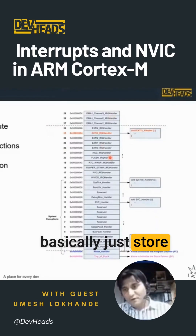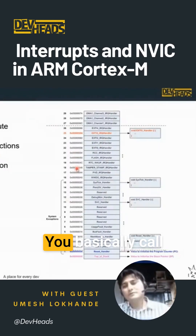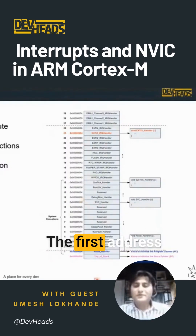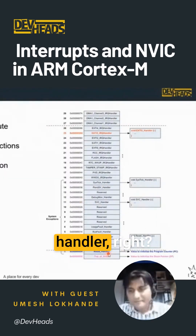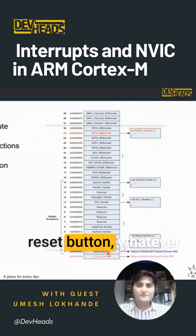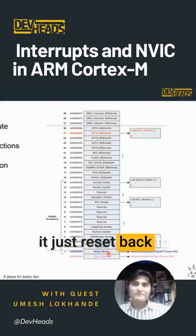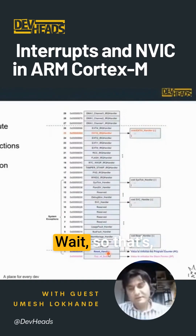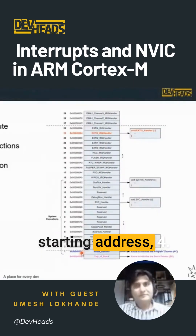The interrupt vector table basically just stores all the memory addresses using a pointer. In the pointer you store the memory address — the first address is basically address four, which is the reset handler. That's why when you press the reset button, whatever your microcontroller is doing, it just resets back to zero and re-executes the code again from the microcontroller memory. That's the starting address: four.